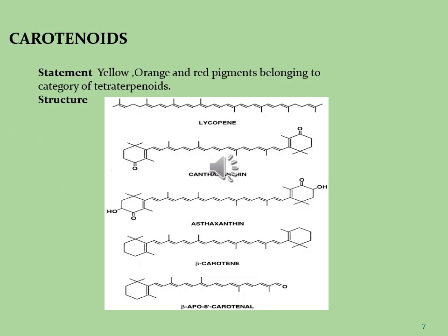Let's see what are the carotenoids. Carotenoids are organic phytoconstituents isolated from less to medium polar fractions of plants. These are yellow, orange, and red pigments belonging to the category of tetraterpenoids. The tetraterpenoids consist of isoprenoid units with formula C5H8O. Some important examples are lycopene, canthaxanthin, astaxanthin, and beta-carotene.